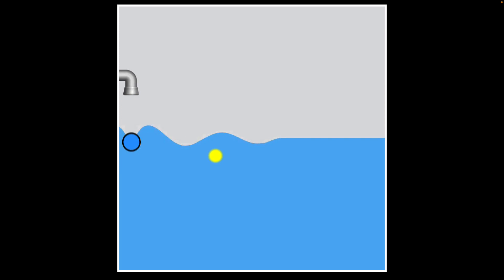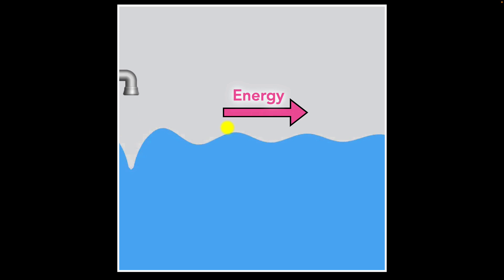Before we begin, let's back up a little. Whenever you disturb matter — like water, for instance — the disturbance propagates outwards. We call that a wave. But remember, the matter itself does not move; it's just vibrating in place. It's the disturbance that moves. So waves transfer energy, not matter. The material or structure through which the waves travel is called a medium.